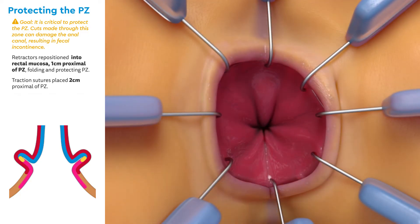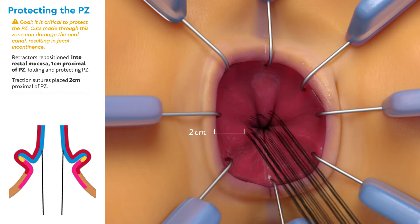Next, multiple traction sutures are placed circumferentially 2 cm proximal to the pectinate zone. Using steady traction, the anus is averted.